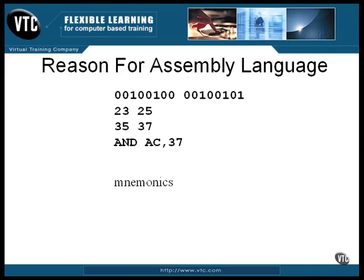Before assemblers existed, it was necessary to program computers by punching in the sequence of ones and zeros. The front panels of the computers consisted of rows of lights — some representing the bits and others representing the address at which the bits were stored. When the computer ran, the lights would flicker as the program ran through the values. You can still see that today in old movies where they show computers with front panels of flashing lights.